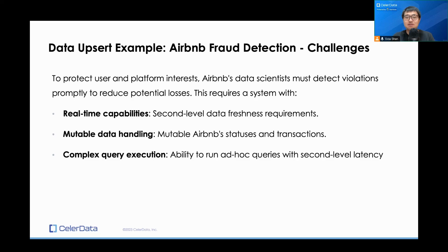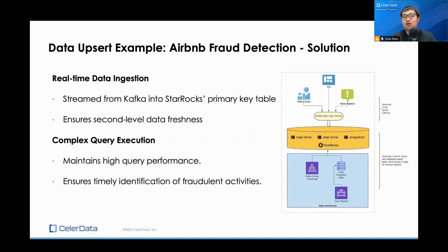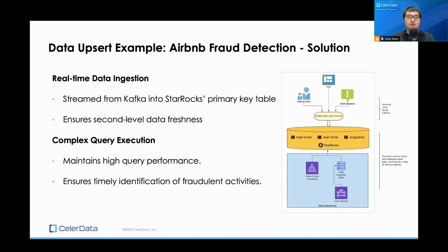Second-level query latency, paired with data freshness requirements, means they have to detect those violations in time before they actually happen. Their solution is based on the delete-and-insert strategy — they are actually using StarRocks' primary key table, which is the initiator of this strategy, now being adopted by many other systems. They stream data from Kafka into StarRocks' primary key table, and immediately they get second-level data freshness on their mutable data. Because this strategy does not affect query performance, they can maintain very high query performance with lots of aggregations and joins, ensuring timely identification of fraudulent activities.